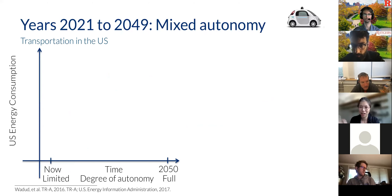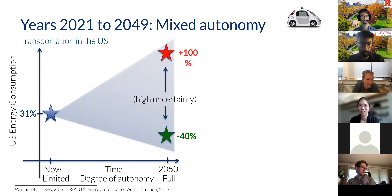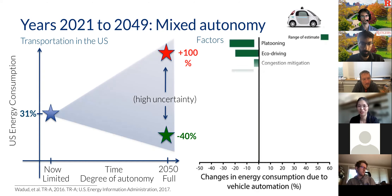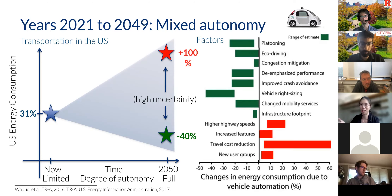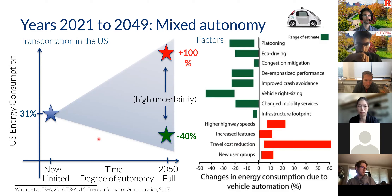Energy is often my go-to motivation for this. Wherever we are on transportation energy today, it's hugely uncertain where we may end up. This huge range of projected energy consumption comes from a lot of different factors — some that increase efficiency, such as platooning, and others that increase consumption, such as induced demand from reduced travel costs. Different weighted likelihoods of these factors contribute to this huge range of uncertainty, and I argue that we have to understand the intermediate regime, which is mixed autonomy.